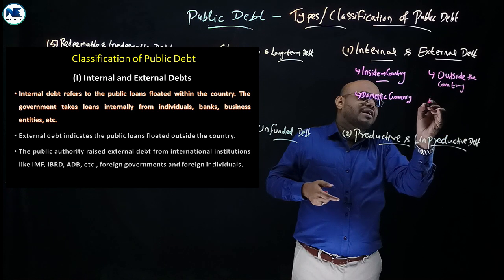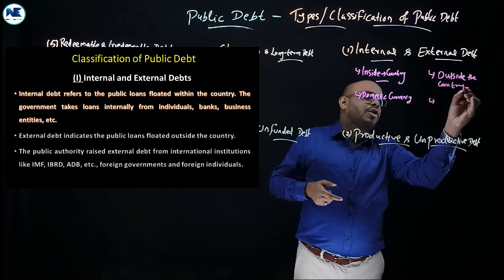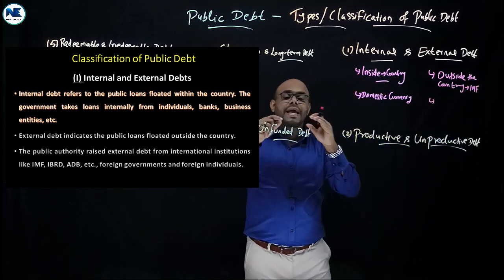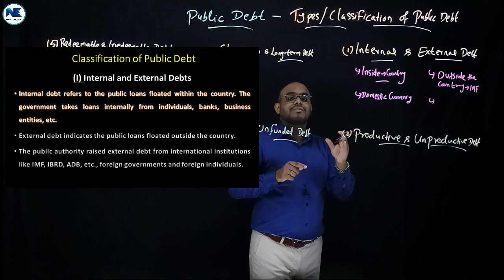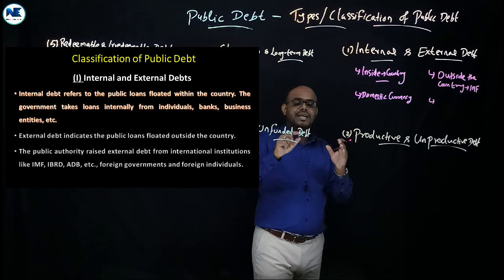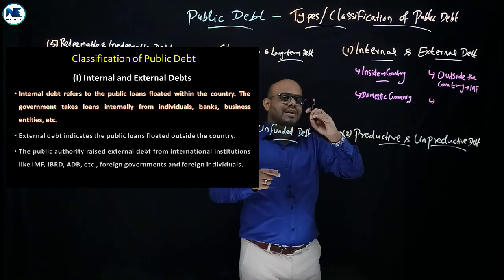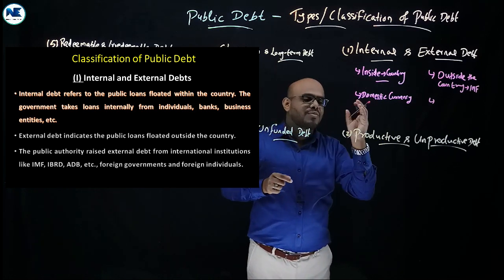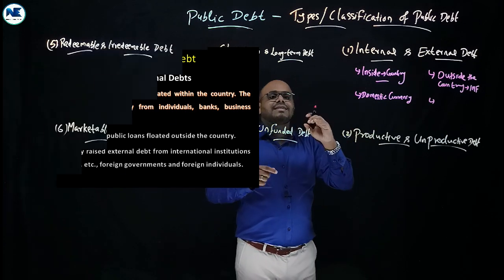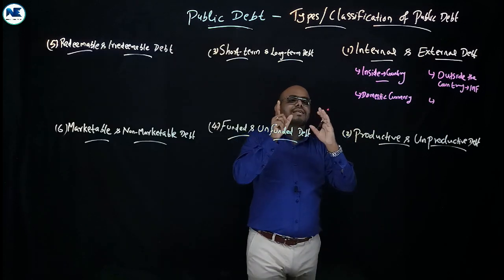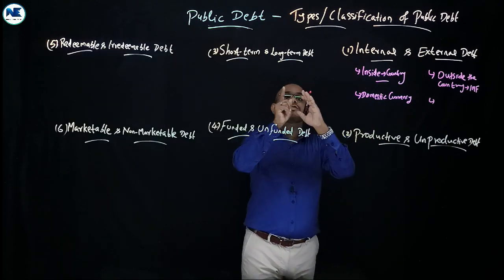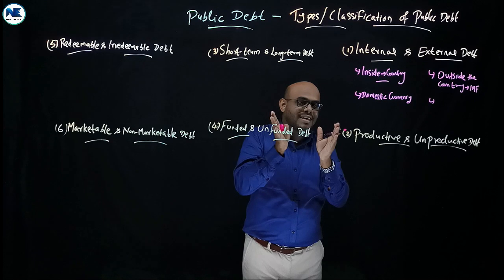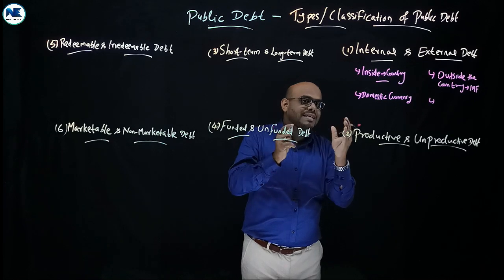For example, taking a loan from the IMF — International Monetary Fund — the World Bank, or the ADB, Asian Development Bank. A best example is the 1990s, when India faced a balance of payment crisis, a BOP crisis.